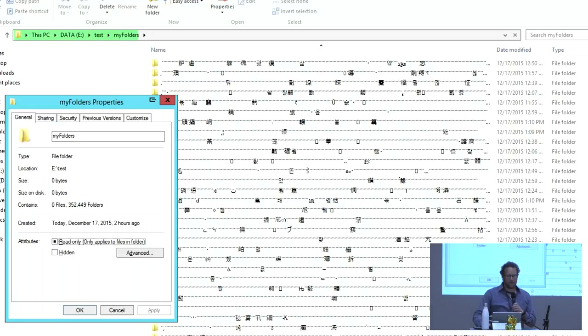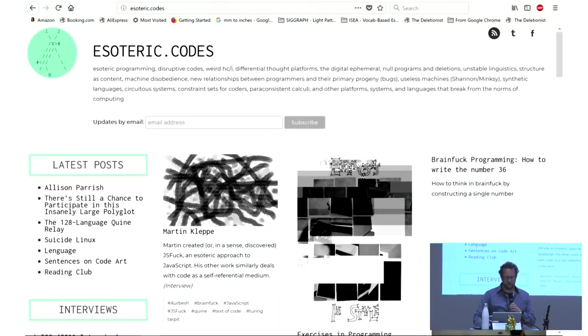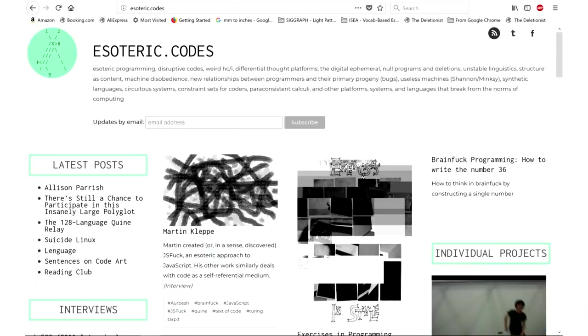Apart from this, I write a blog called esoteric.codes, which began as a series of interviews with people who create esoteric programming languages and has expanded to become a blog that's also about other experiments in language and code. It's become a meeting place for people who are from that hacker and hobbyist side with people who are approaching this type of work from computational literature or from digital art.